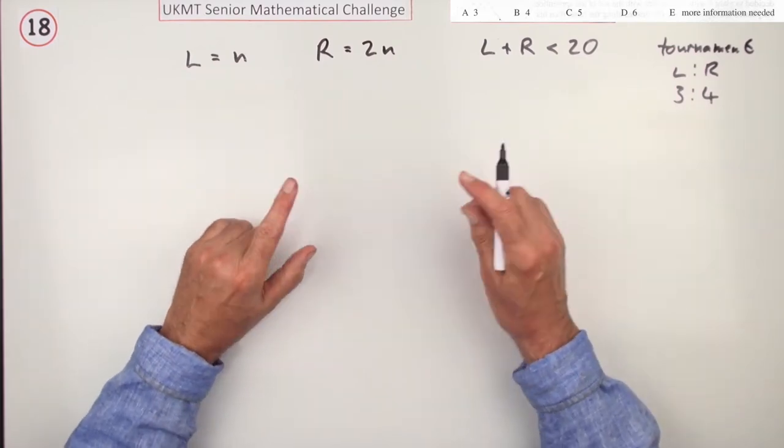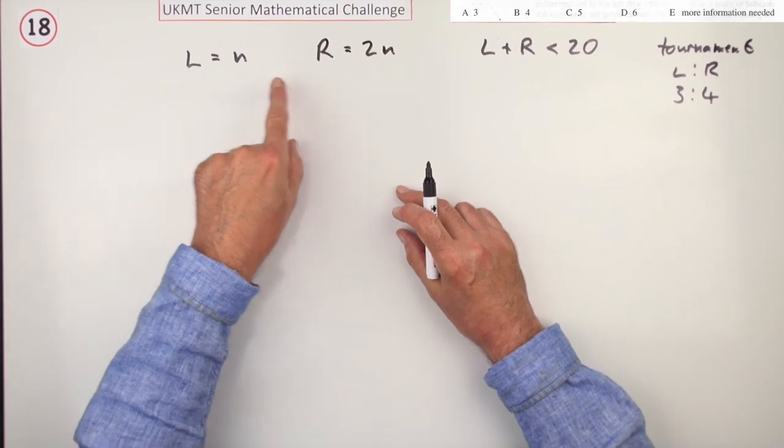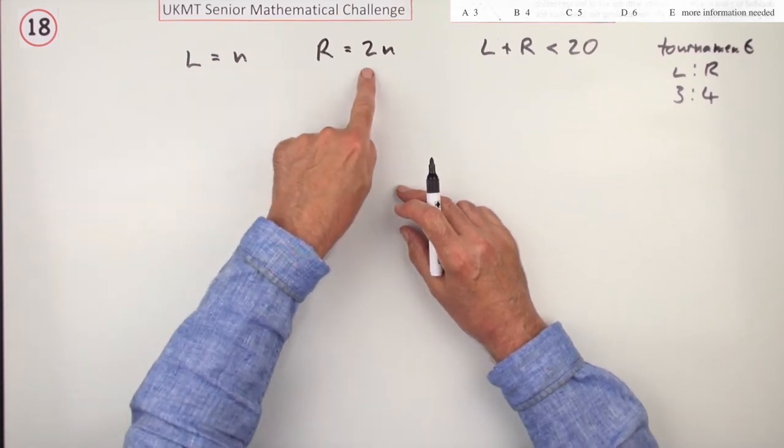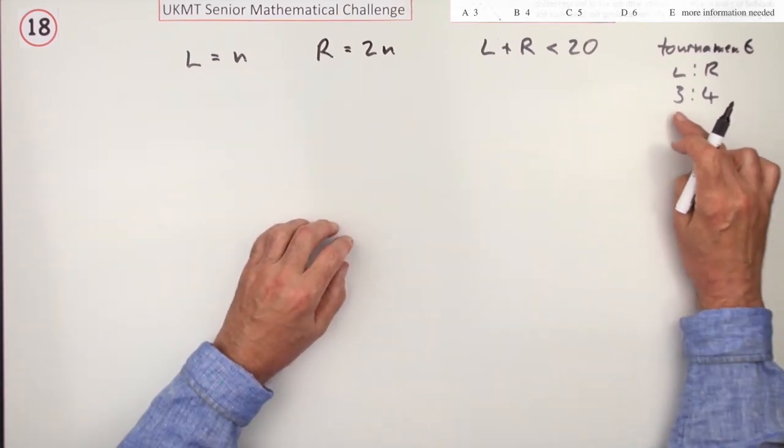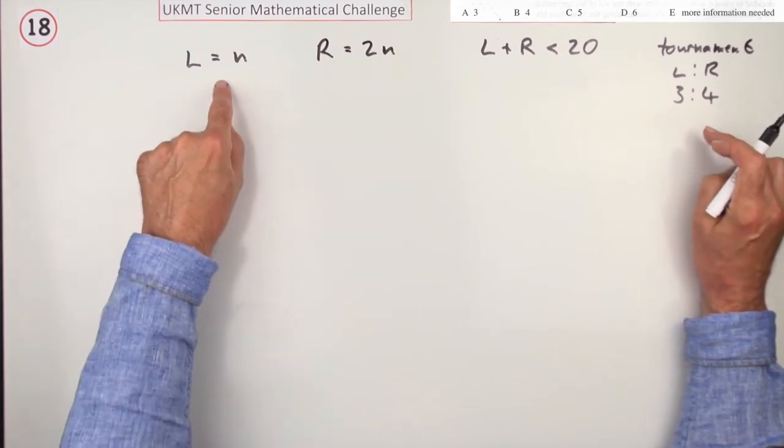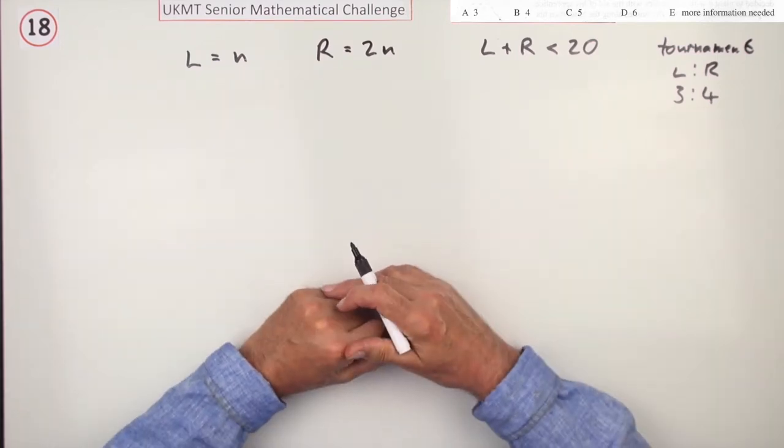One thing you do notice is the ratio of left to right is 1 to 2. But the final result is 3 to 4, that seems to imply that the left-handed players are better than the right-handed players.